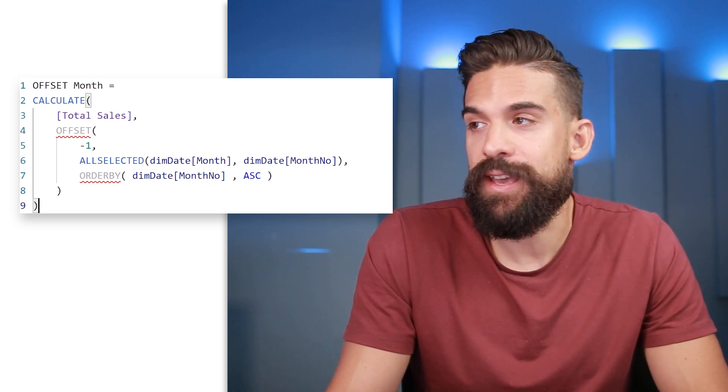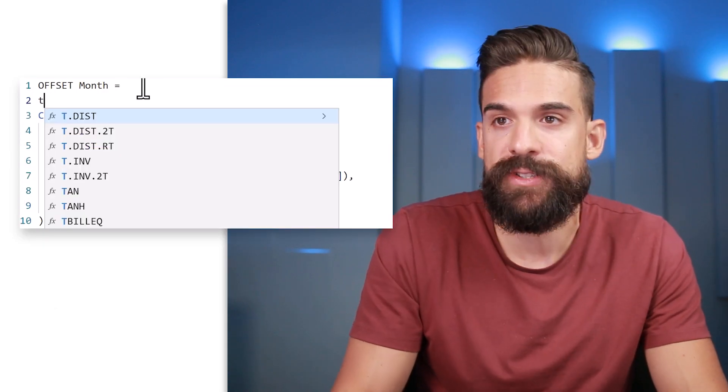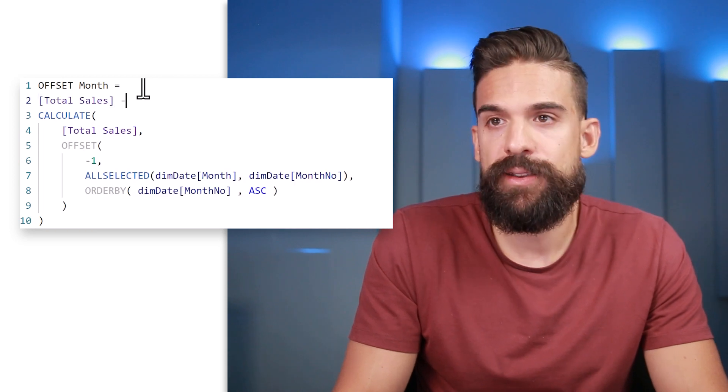Now let's see if it works — and it works, the problem is fixed. Now we want the month over month difference, so total sales minus what we just wrote. It works, however for January it's a little weird because we have 40 minus nothing since there's no offset value, so it shows 40. How can we show just a blank instead?